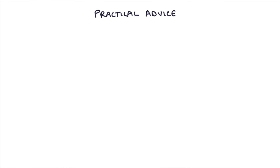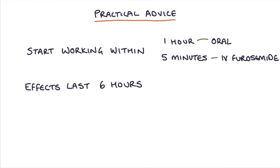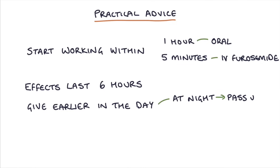A little bit of practical advice: loop diuretics start working within an hour if given orally, and within five minutes with IV furosemide, making them really effective in acute pulmonary edema and acute heart failure. The effects last about six hours. It's worth giving them earlier in the day, because if given later at night patients will be passing urine frequently, affecting sleep and increasing the risk of falls — particularly in elderly patients getting up at night.